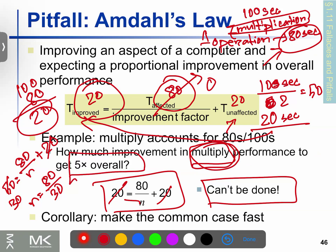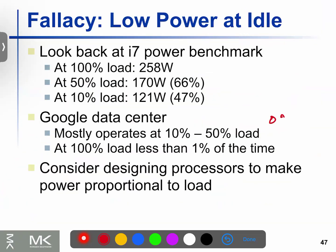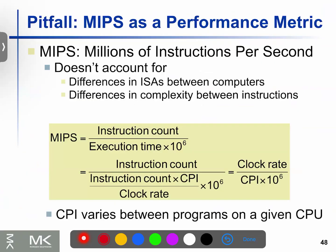The MIPS metric stands for Millions of Instructions Per Second — meaning millions of instructions executed per second. MIPS is calculated as clock rate divided by CPI. This is the main concept for measuring instruction throughput with large numbers of instructions.